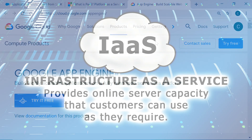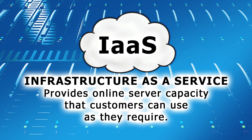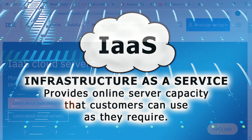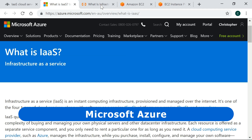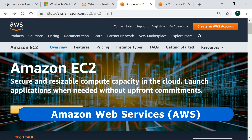Finally, IaaS, or infrastructure as a service, provides online server capacity that customers can use as they require. For example, IaaS allows existing applications to be migrated from a local data center to a cloud facility, rather than requiring new applications to be built on the cloud vendor's platform. Major IaaS providers include IBM, Microsoft, Alibaba, and Amazon Web Services.